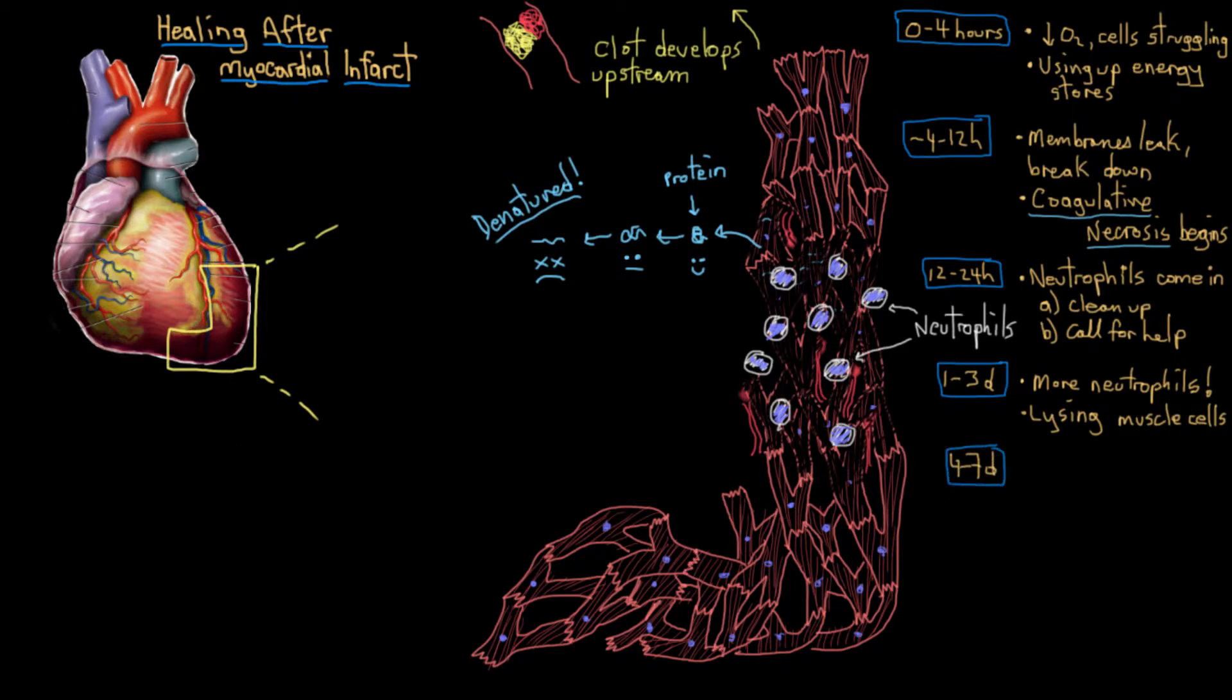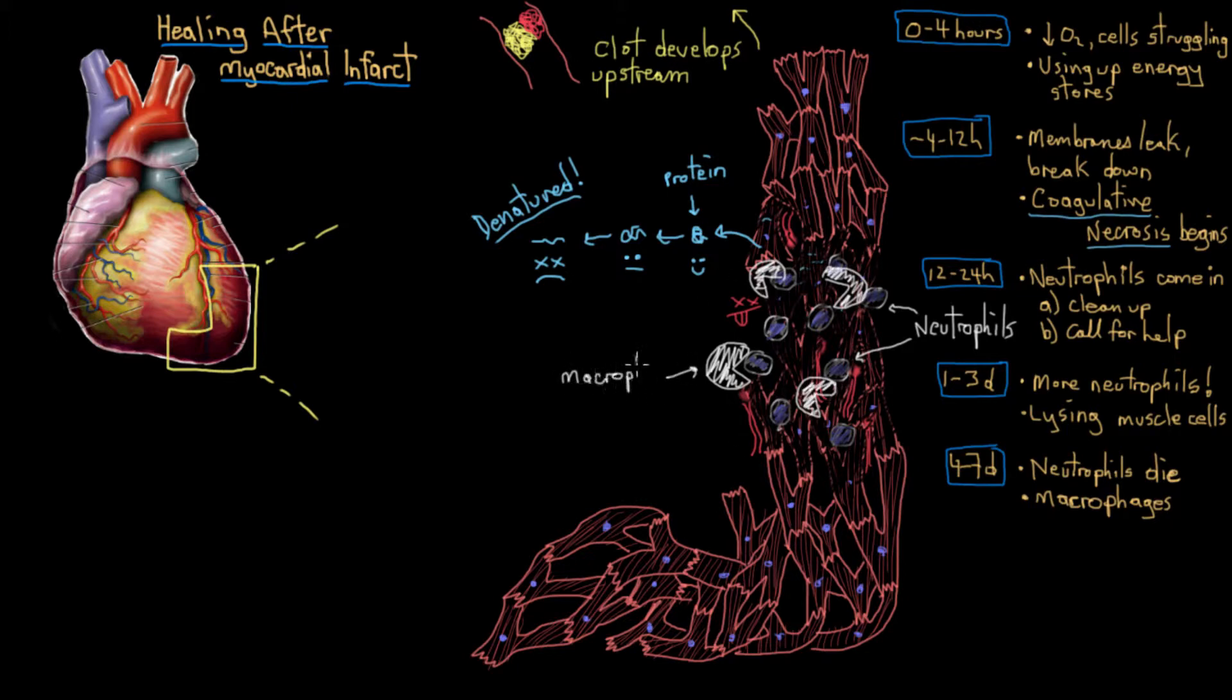Between four and seven days, the neutrophils start to die off because they're really just overworking themselves, trying to clear everything up. So luckily, new reinforcements arise, the macrophages. Macrophages are another type of white blood cell of the immune system. And they're really good at cleaning up debris and cleaning up dead tissue.